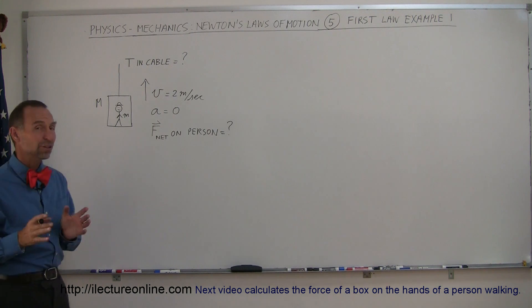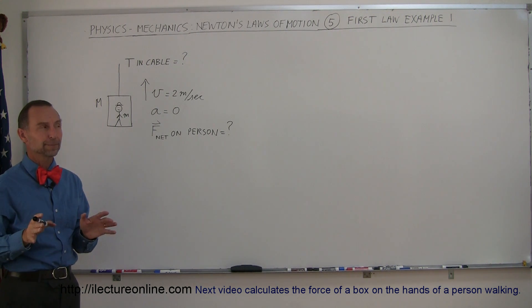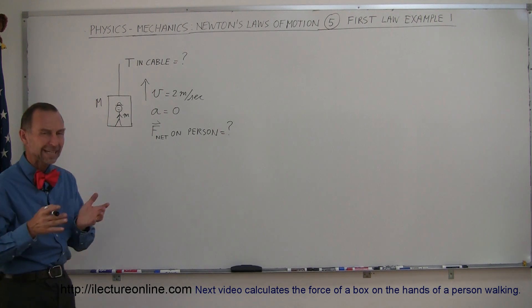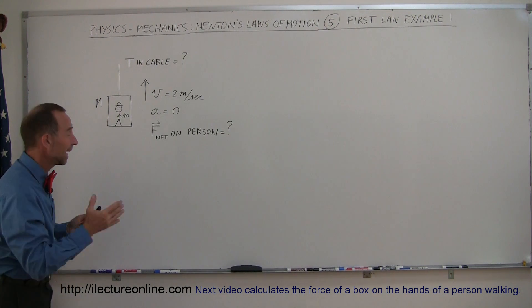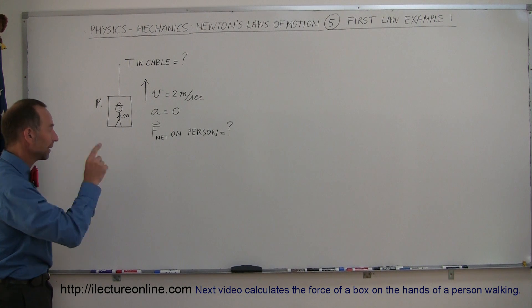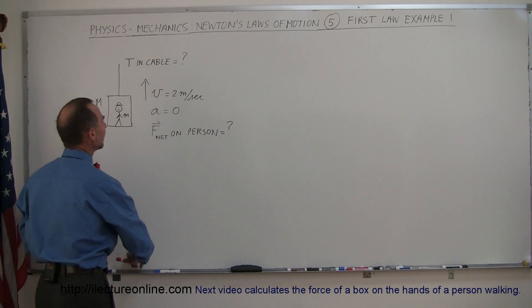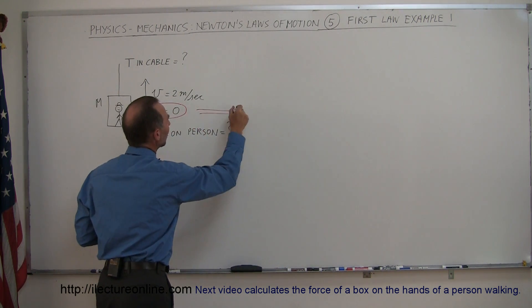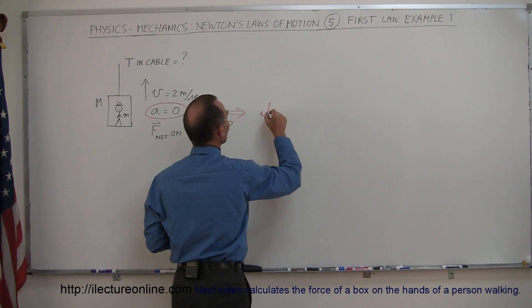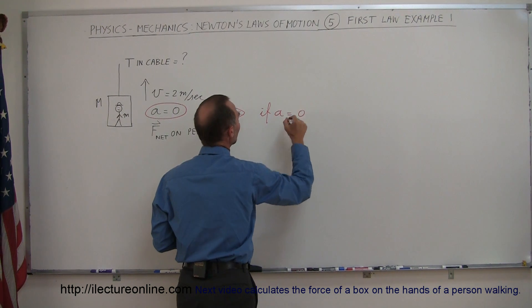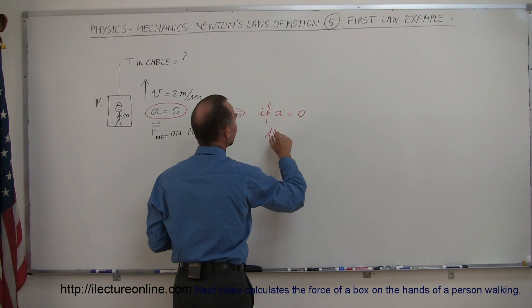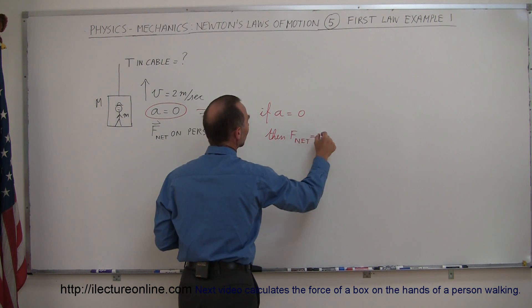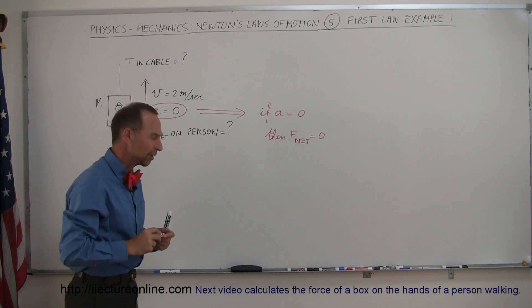It turns out the net force on that person is equal to zero. Now you might ask, how can there be no net force on the person and yet the person is going up? Well, the key is understanding that the acceleration is equal to zero. From Newton's second law, we know that if a is equal to zero, then F_net must equal zero.